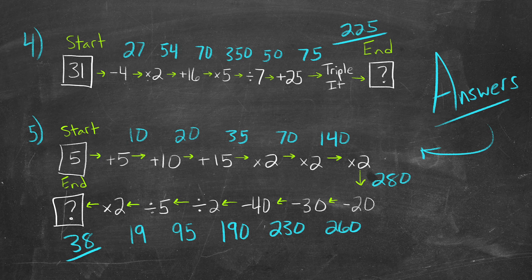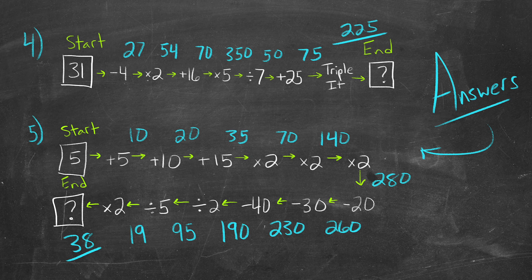And then lastly, number five — we start with 5: plus 5 is 10, plus 10 is 20, plus 15 is 35, times 2 is 70, times 2 is 140, times 2 is 280, minus 20 is 260, minus 30 is 230, minus 40 is 190, divided by 2.